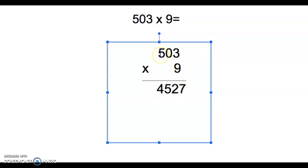9 times 5 is 45. So if we multiply 503 times 9, we get 4,527.